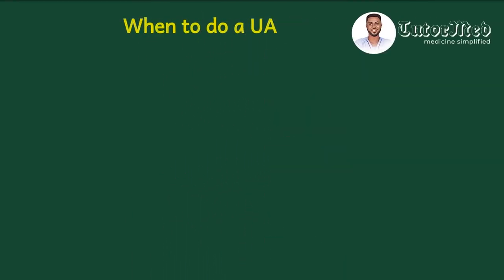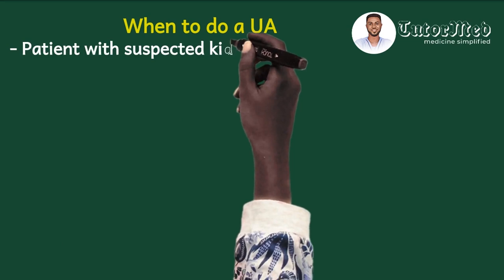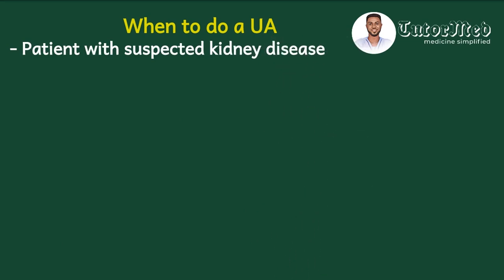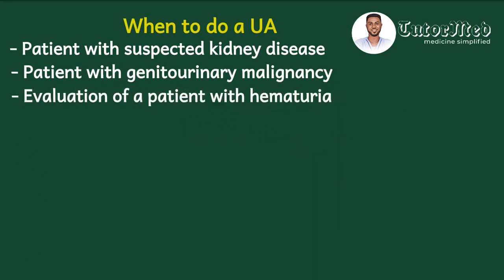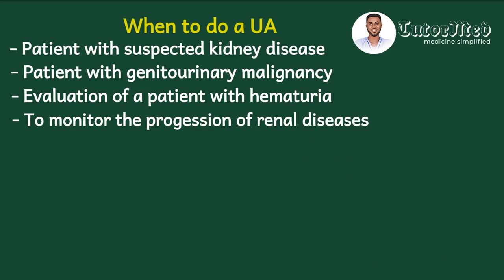When do we decide to do a urinalysis for a patient? There are a number of reasons: first, any patient suspected to have kidney disease, whether acute kidney injury or chronic kidney disease — for example, a patient with a puffy face and decreased urine output. Second, any patient suspected to have genitourinary malignancy. Third, to evaluate any patient who comes with hematuria or red urine. Fourth, to monitor progression of renal diseases like nephrotic syndrome, and also for suspected UTI, kidney stones, or ureteric stones.